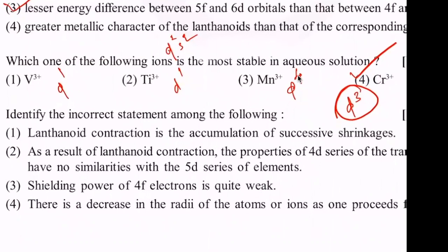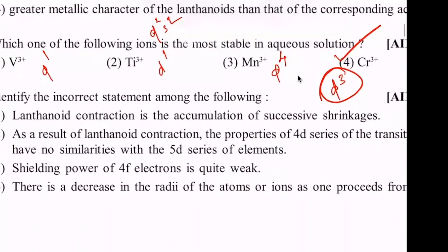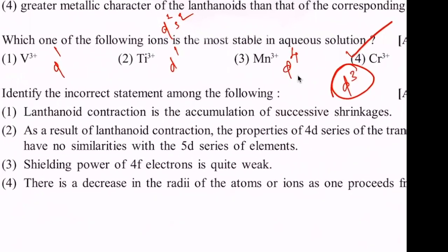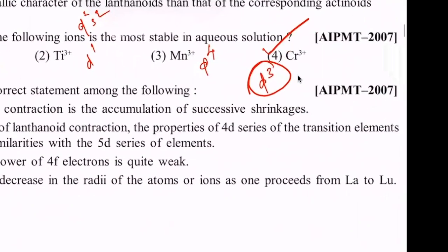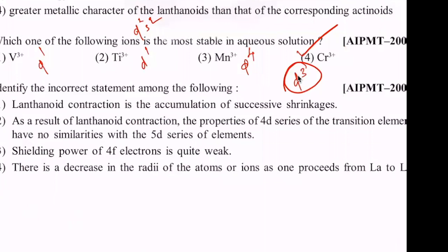Identify the incorrect statement among the following: lanthanide contraction is the accumulation of successive shrinkages; the properties of the 4D series of transition elements have no similarities with the 5D series; shielding power of 4F electrons is quite weak; there is a decrease in radii from lanthanum to lutetium. Option 2 is incorrect — lanthanide contraction is there, and the 4D and 5D series do have similarities.